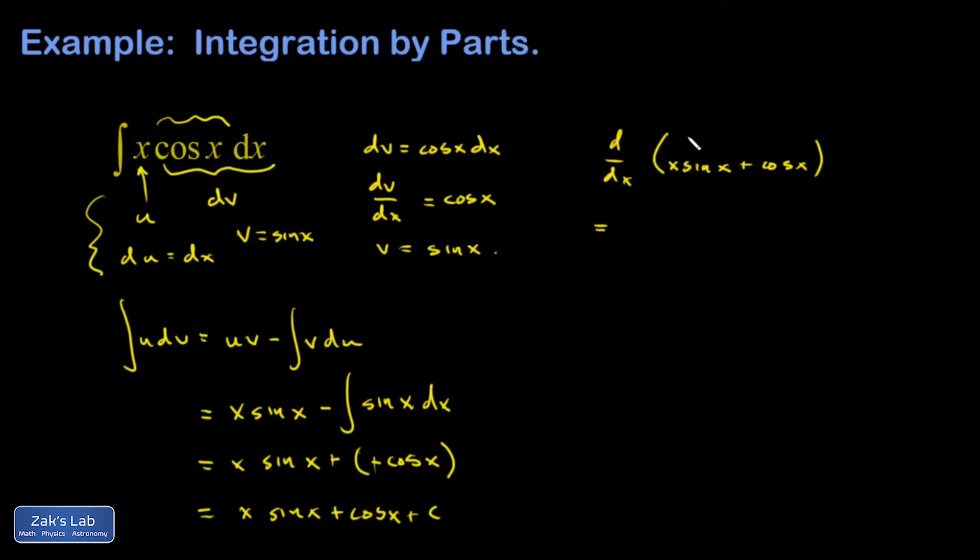So I have to use the product rule on that first piece, and I get derivative of the first function is just 1, so I get sine x. And then I keep the first guy left alone, derivative of the second. And then the second term, the derivative, is negative sine x. Those cancel out, and I get what I started with.